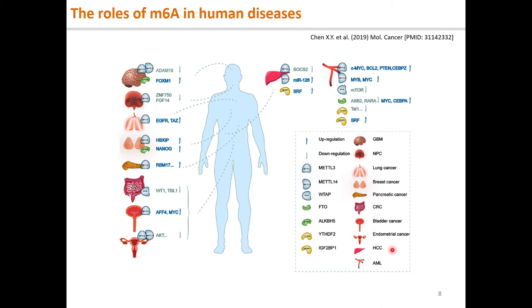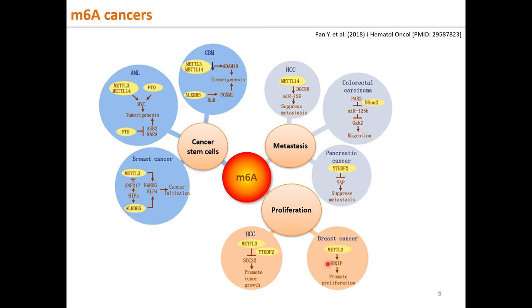Clinically, M6A dysregulation is involved in many human diseases across all major systems. In particular, M6A is closely associated with cancers. For example, in cancer stem cell function: M6A-ADAM19 and FOXM1 in glioblastoma multiforme GBM, M6A-MYC in acute myeloid leukemia AML, and M6A-NANOG in breast cancer. In cancer metastasis: M6A-HuR and YTHDF2 in pancreatic cancer. In cancer cell proliferation: M6A-SOX2 or M6A-HBXIP in liver and breast cancers.